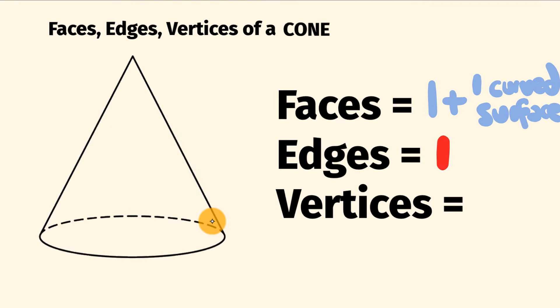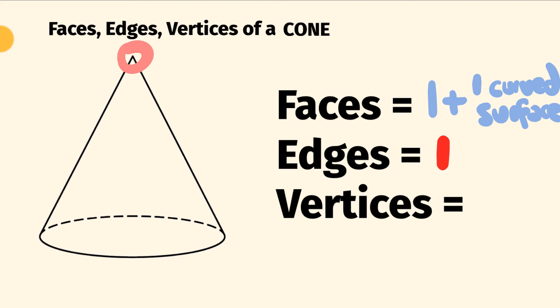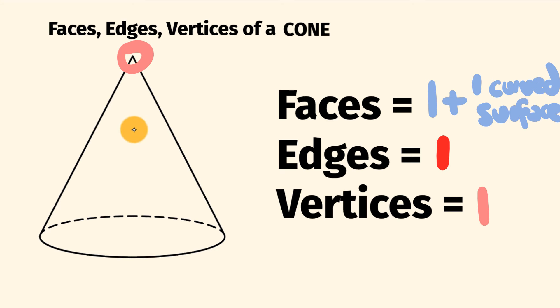So finally, to the number of vertices. These are the corners of the shape — the sharp bits. So how many sharp bits do we have here? Well, you can see this very pronounced part up here. We have this one vertex. It's got a special name because it's directly opposite the base — it's called an apex. So one vertex altogether.